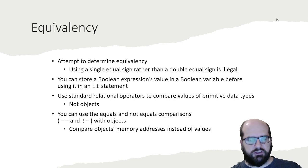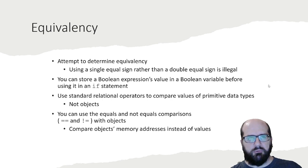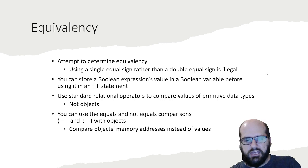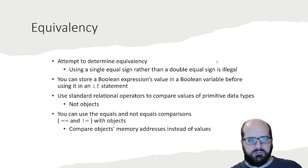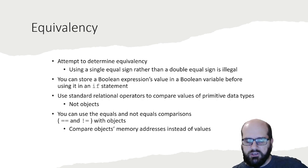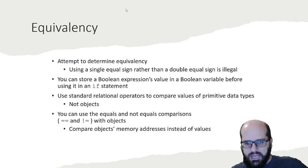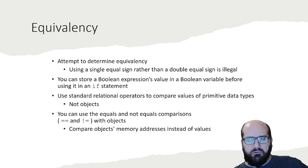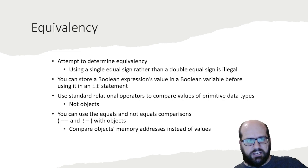It's also important that you understand equivalency. If you use a single equal sign, that's an assignment operator and it will not work. You can store a boolean expression's value in a boolean variable before using an if statement. I can use standard relational operators to compare primitive data types, like the double equal sign, but I can't use that for an object or reference type — only primitives. If I'm going to compare an object, I need to use a function within the object, like equals. Otherwise, I'm just comparing memory addresses, and it will almost always return false.